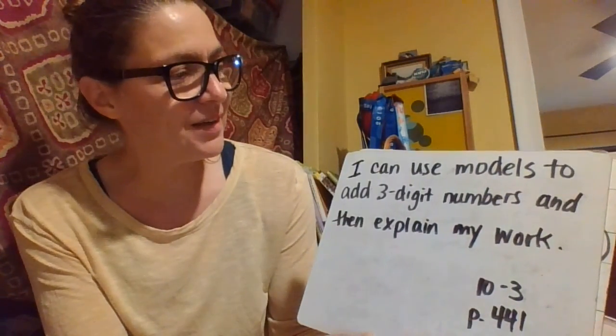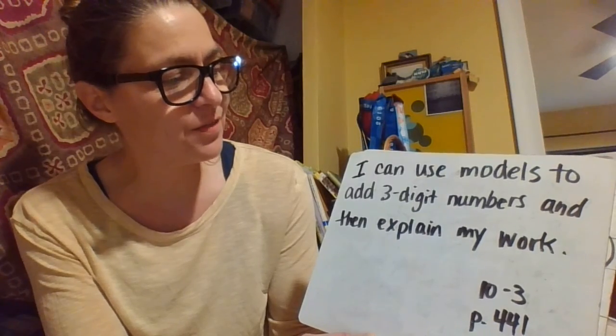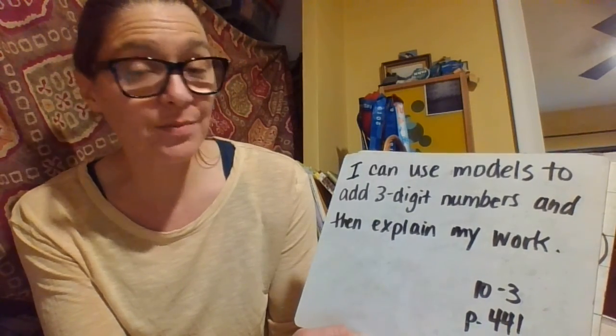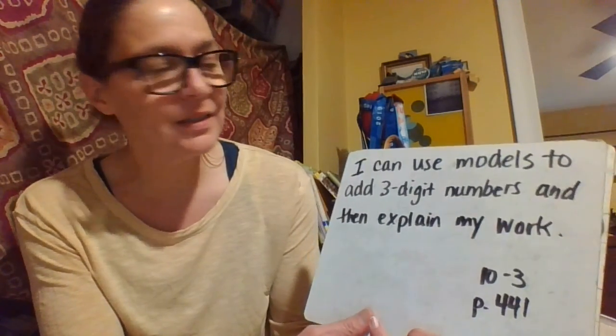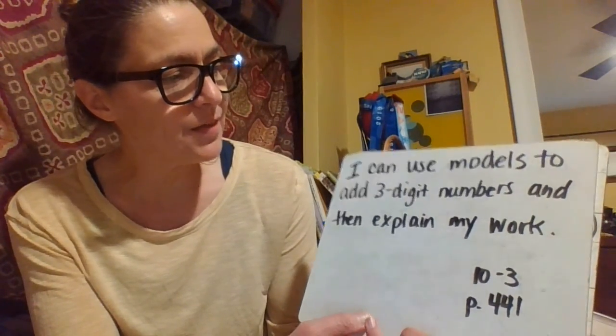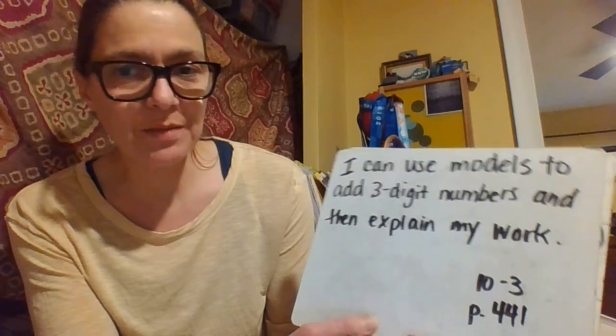Let's read the I can statement together. I can use models to add three-digit numbers and then explain my work. We're on 10-3 page 441. I can use models to add three-digit numbers and then explain my work.